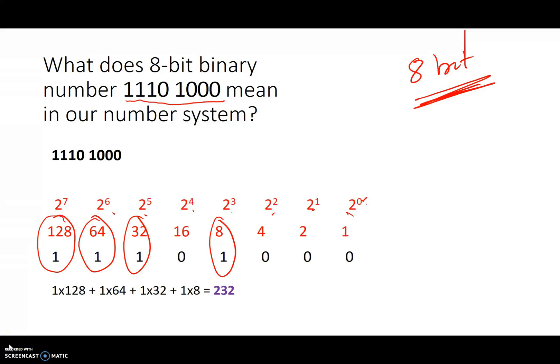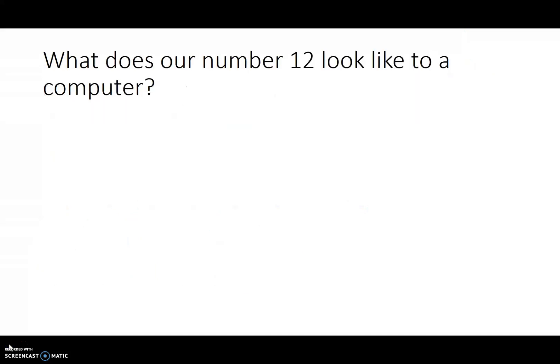So next, now that we've figured out how to go from a computer number system — a binary string — to our number system, let's do the reverse. For example, what does our number 12 look like to a computer?